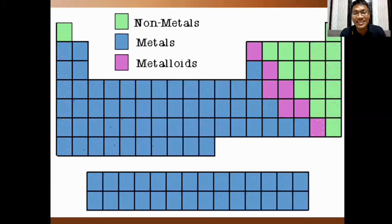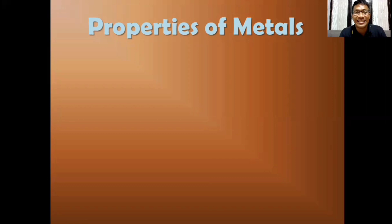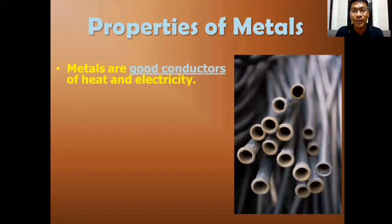On the next slides, we will discuss their properties. Metals have the following properties. They are good conductors of heat and electricity. When we say good conductors, it means that the heat and electricity can easily pass through them. That's why metals are used in our cooking equipment or utensils, as well as electrical wires.